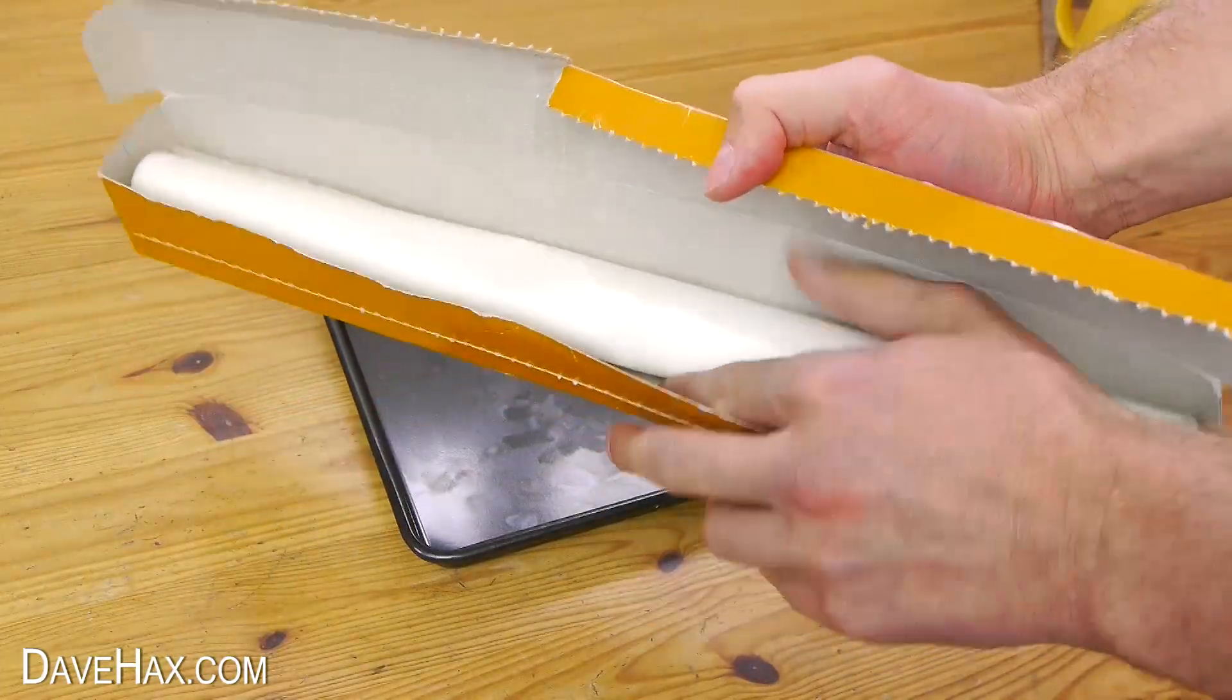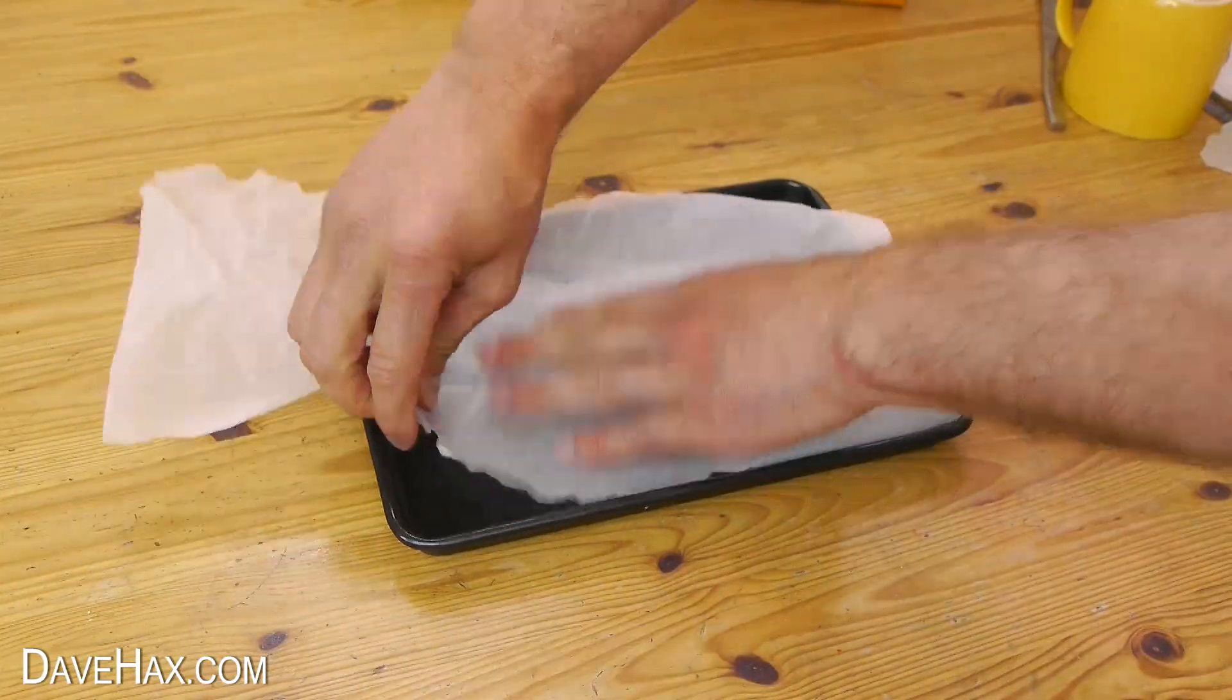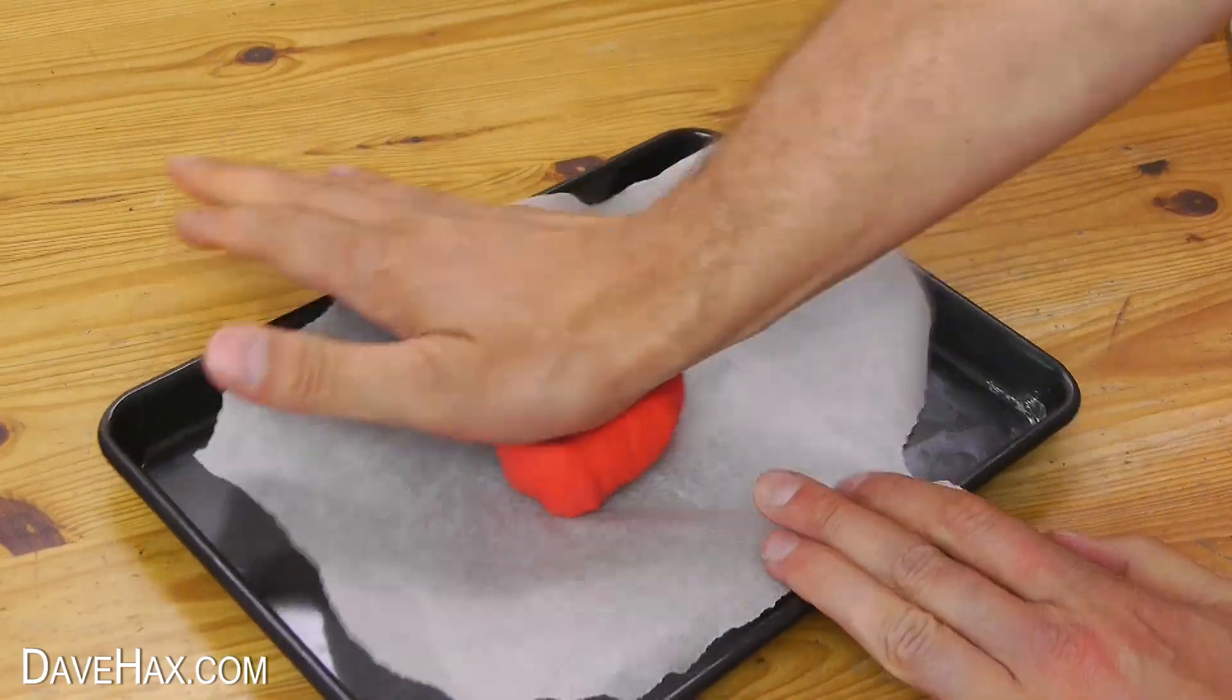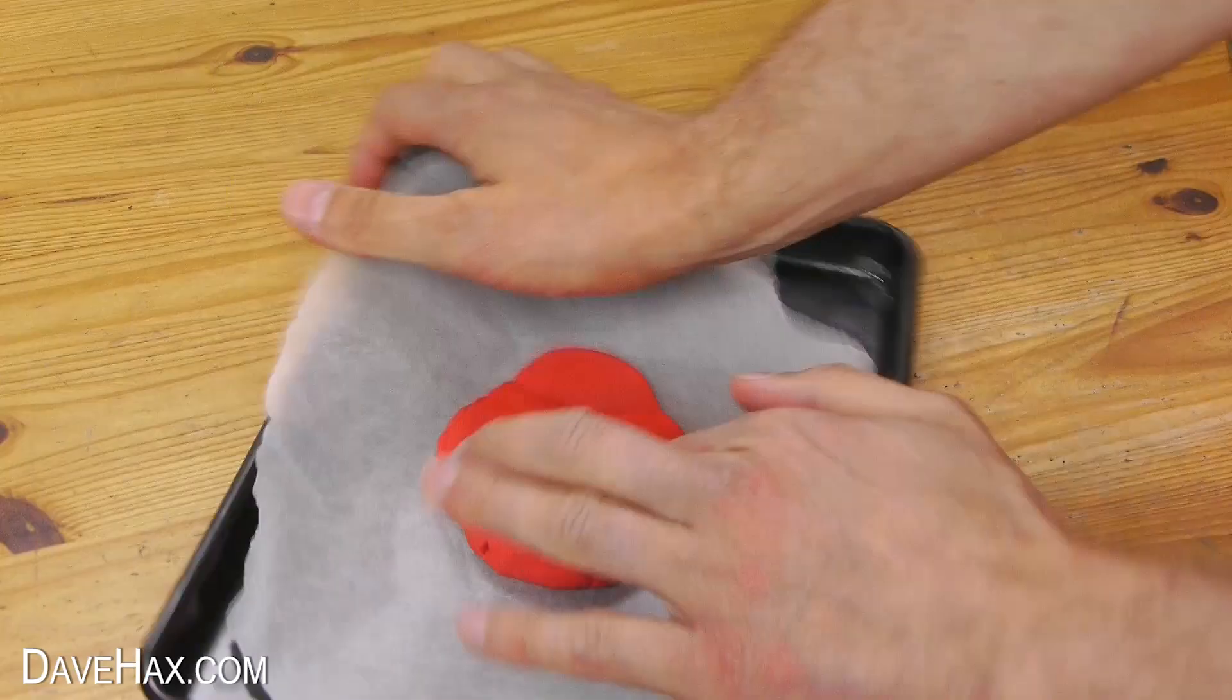Start by taking some baking paper and lay it out on a tray. We're going to be making a plasticine mould again, so press it out nice and flat on the paper.